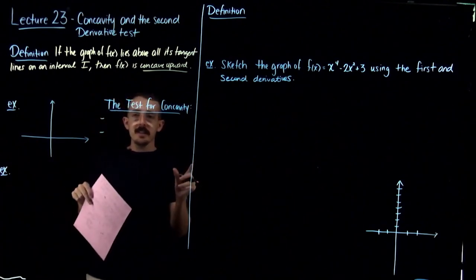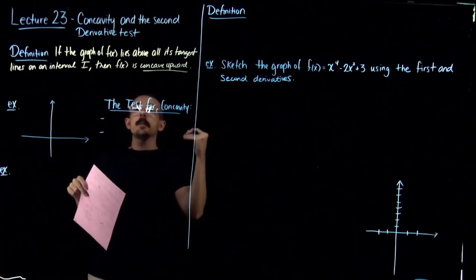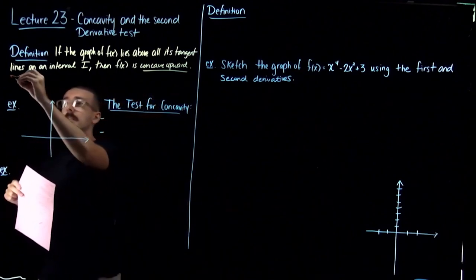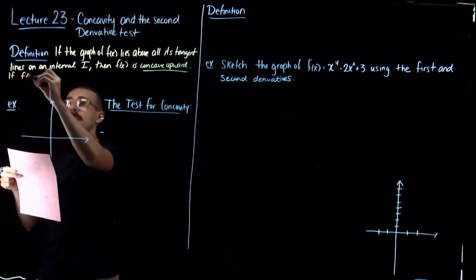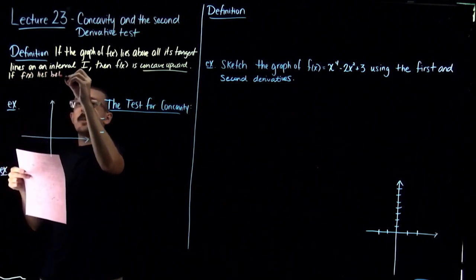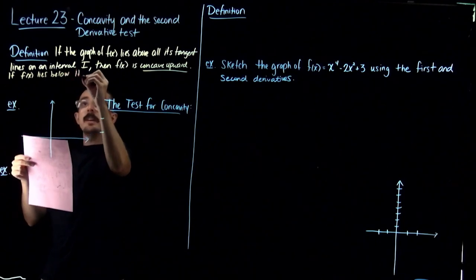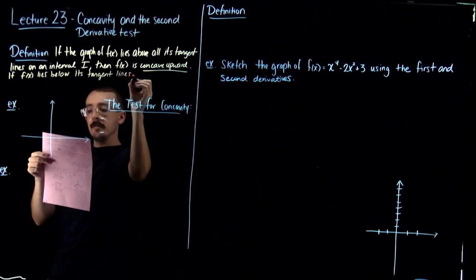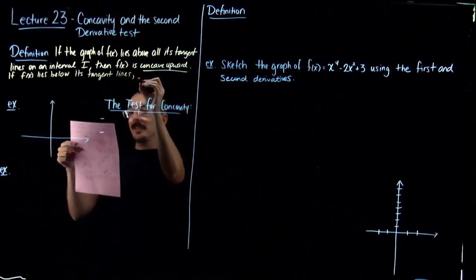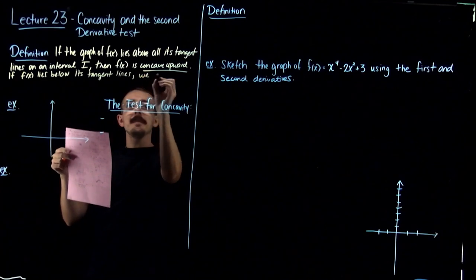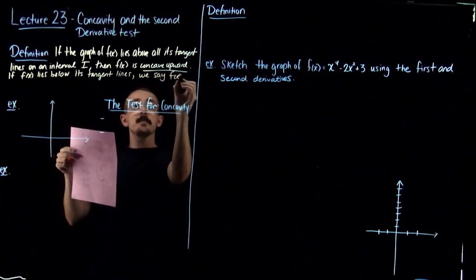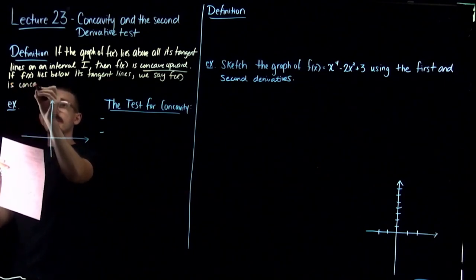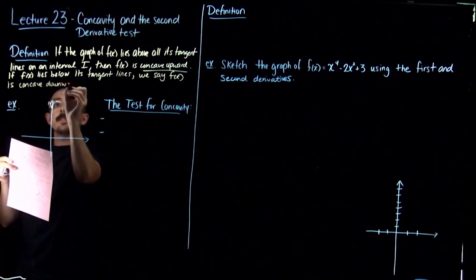So if you're drawing tangent lines to the curve and the graph is above every time, then we're concave up. And a similar thing can be said for concave down: if f(x) lies below its tangent lines on some interval i, we say f(x) is concave downward.